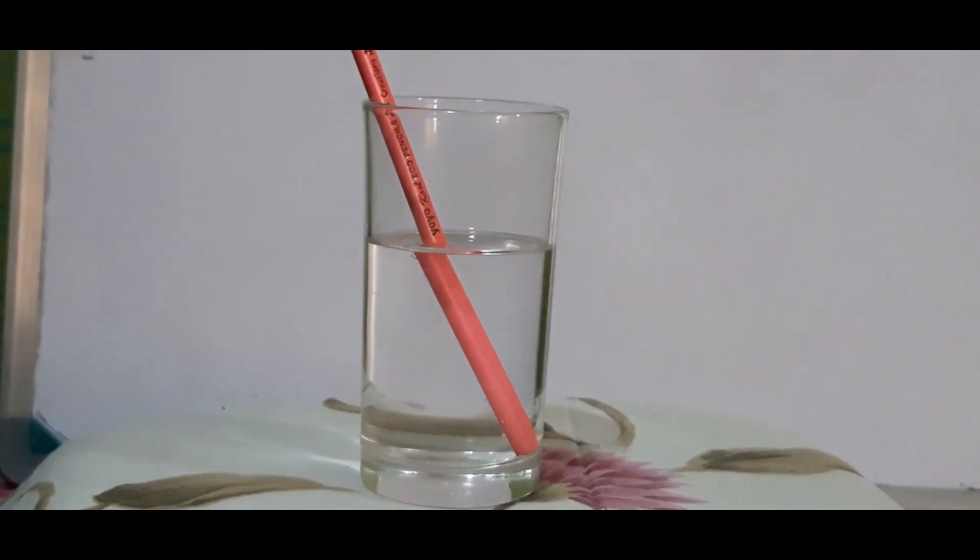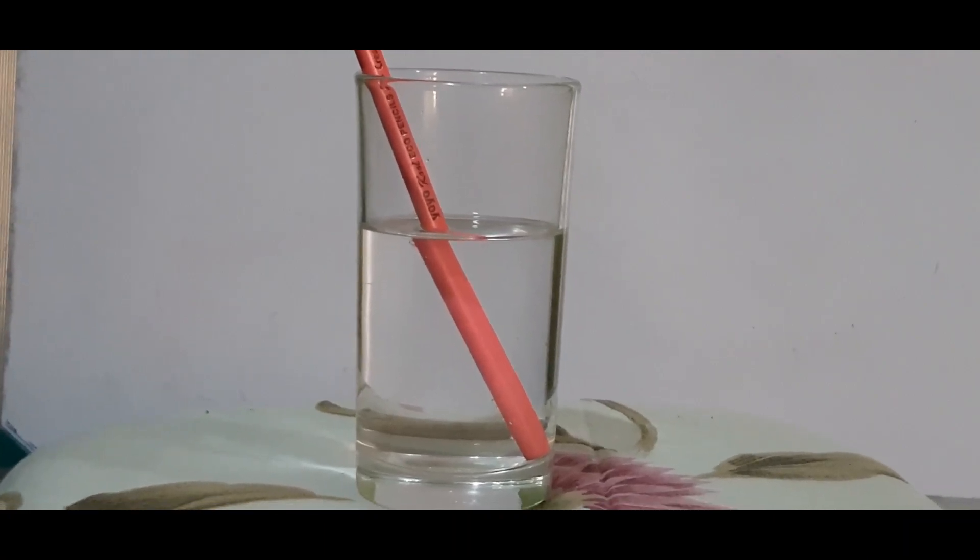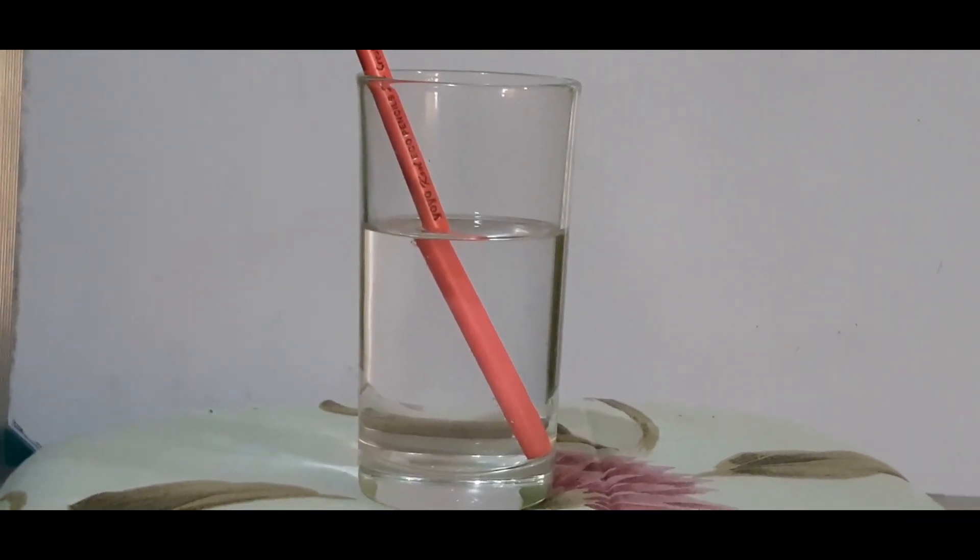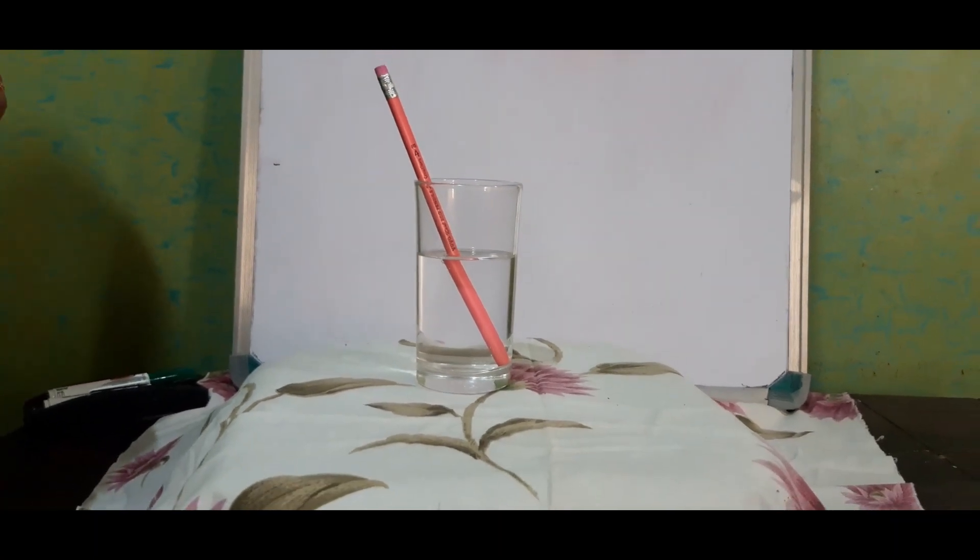When it travels from rarer medium to denser medium, it bends towards the normal. And when it travels from denser medium to rarer medium, it bends away from the normal. This is refraction of light.